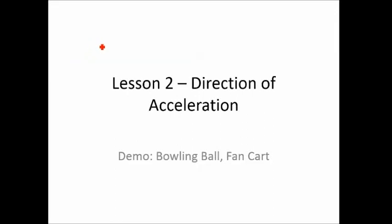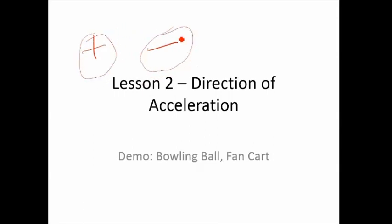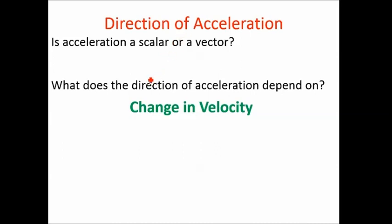What we're trying to remember here is that acceleration has a direction to it — it can be positive or it can be negative. It's easiest to remember if we think of acceleration as being a push on something, like the wind blowing, which could blow in the positive direction or in the minus direction. Acceleration is a vector because it is a change in velocity over time, and since velocity is a vector, a change in velocity is also a vector. So acceleration is a vector.